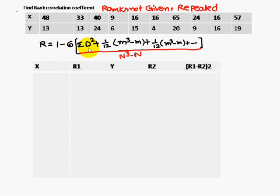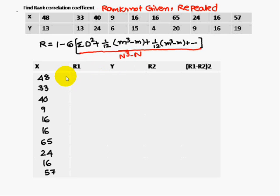The formula is: r = 1 minus 6 into [sigma d square + (1/12)(m³ − m) + (1/12)(m³ − m) + ...] divided by (n³ − n). This is the formula we will use.